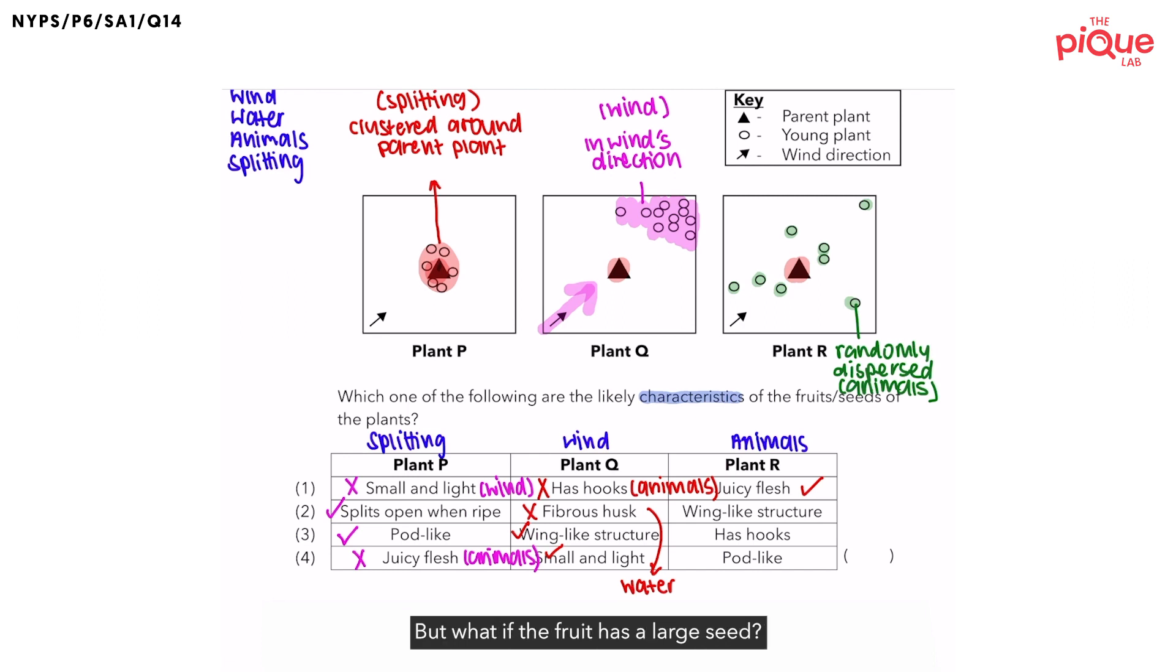But what if the fruit have a large seed? Would the animals still swallow these large seeds? No. Instead, they would spit out these large seeds further away from the parent plant. The second option, fruits that have a wing-like structure, are they dispersed by animals? No. They are most likely to be dispersed by wind, not animals.